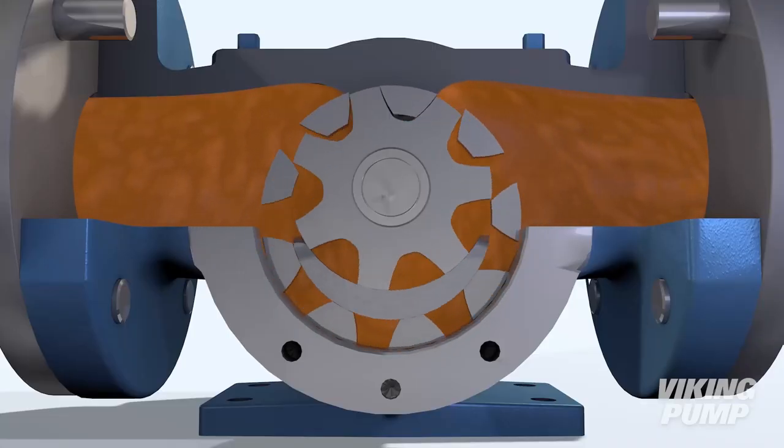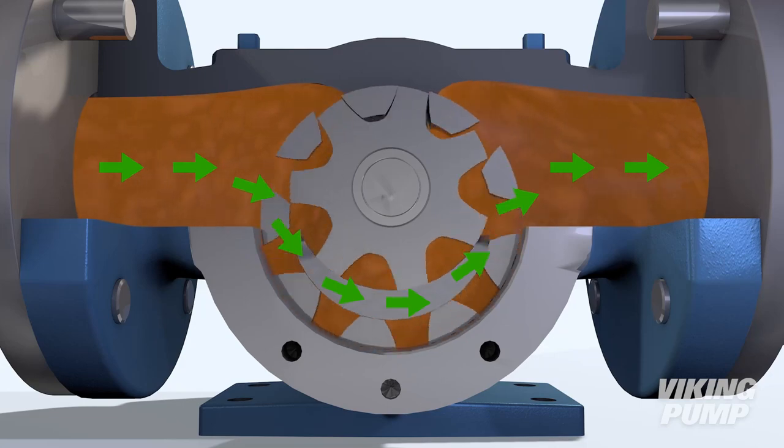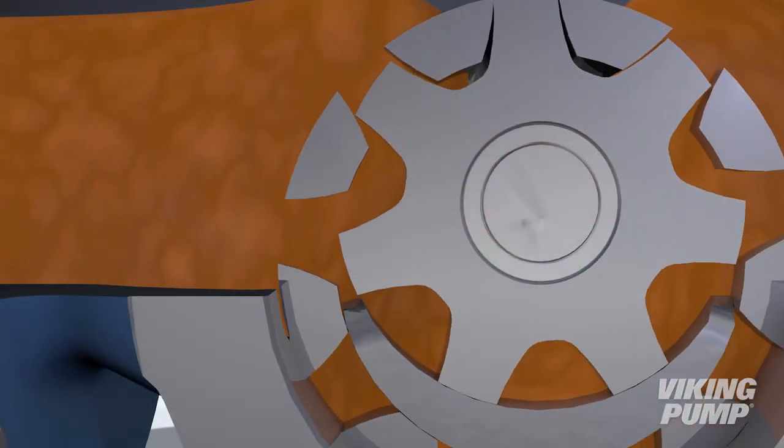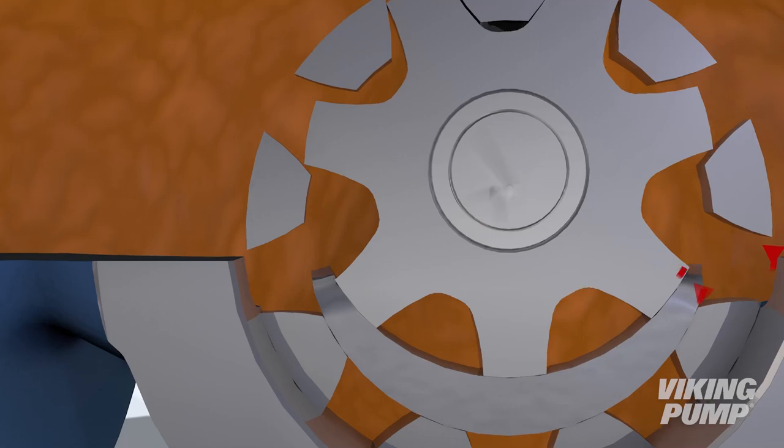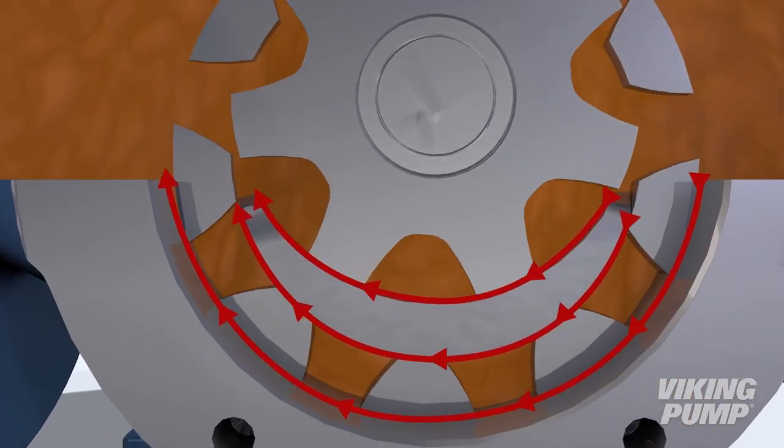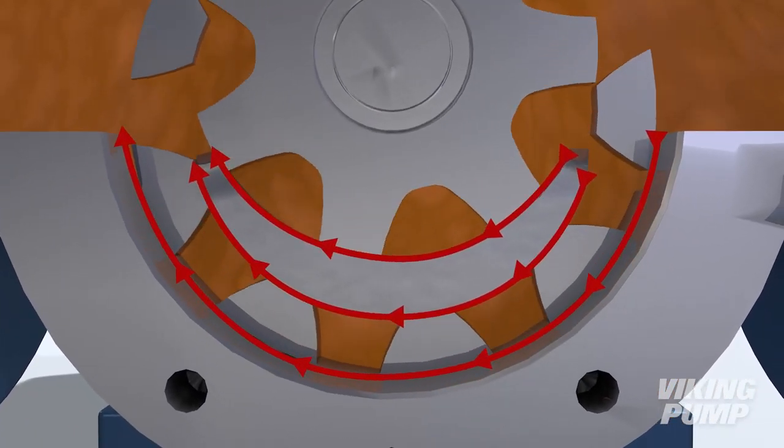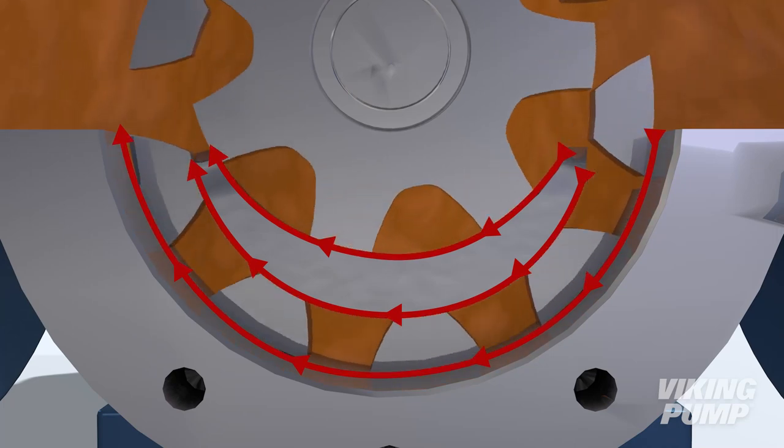In a rotary positive displacement pump, the flow direction follows the rotation of the gears or other pumping elements. Small clearances between and around the gears allow them to rotate freely, but this also allows for a small amount of liquid to leak or slip back from the high pressure side to the low pressure side of the pump.